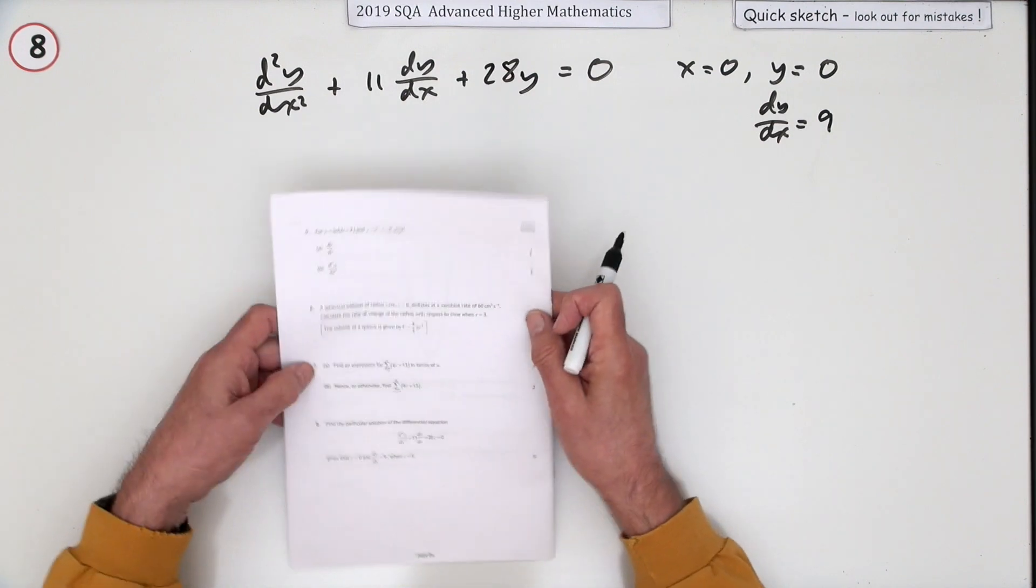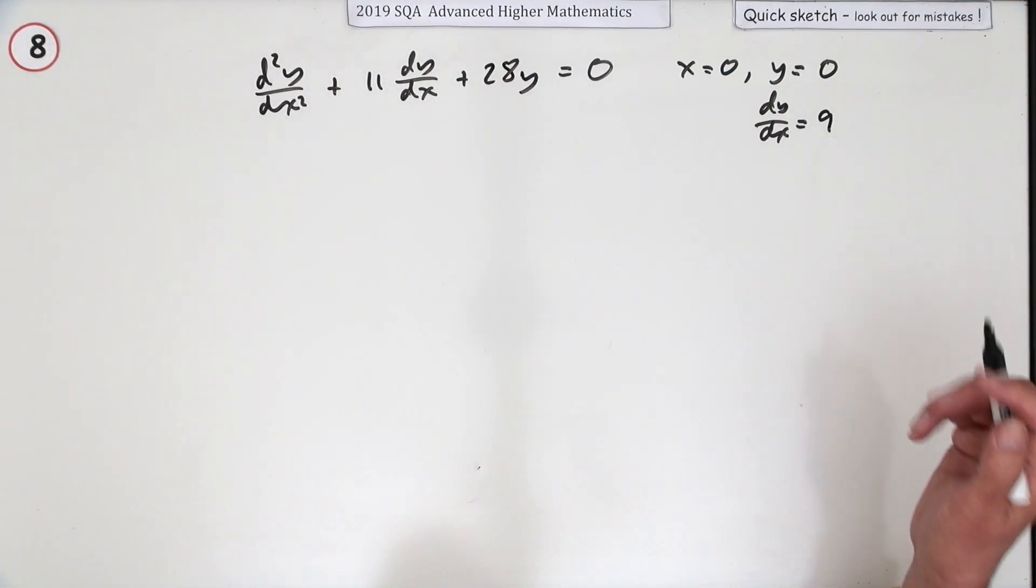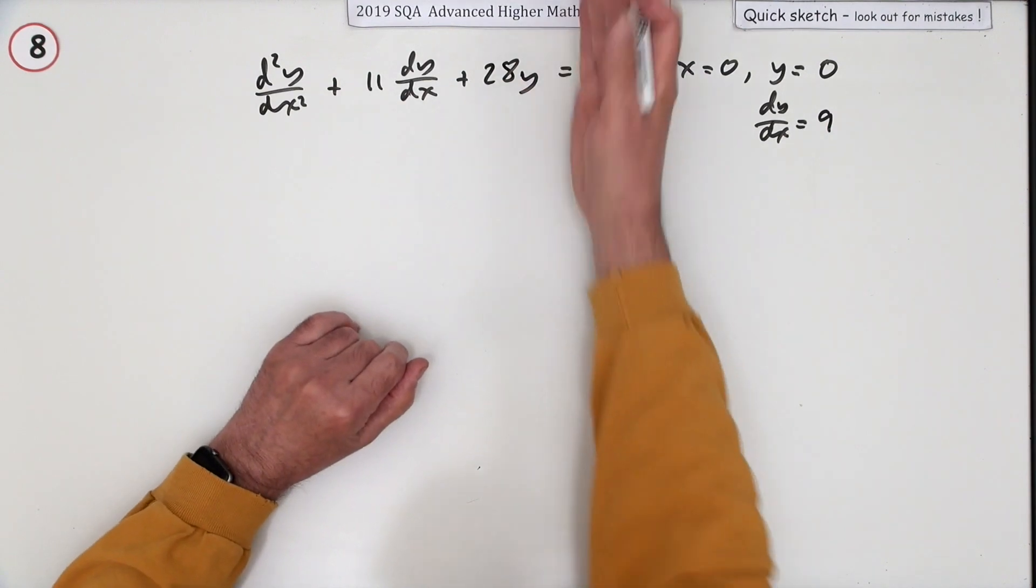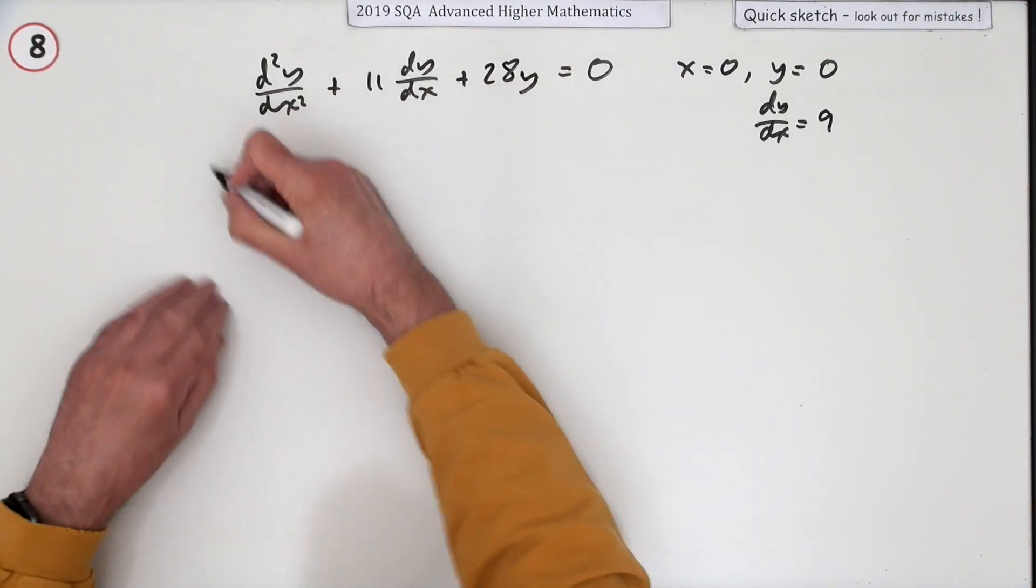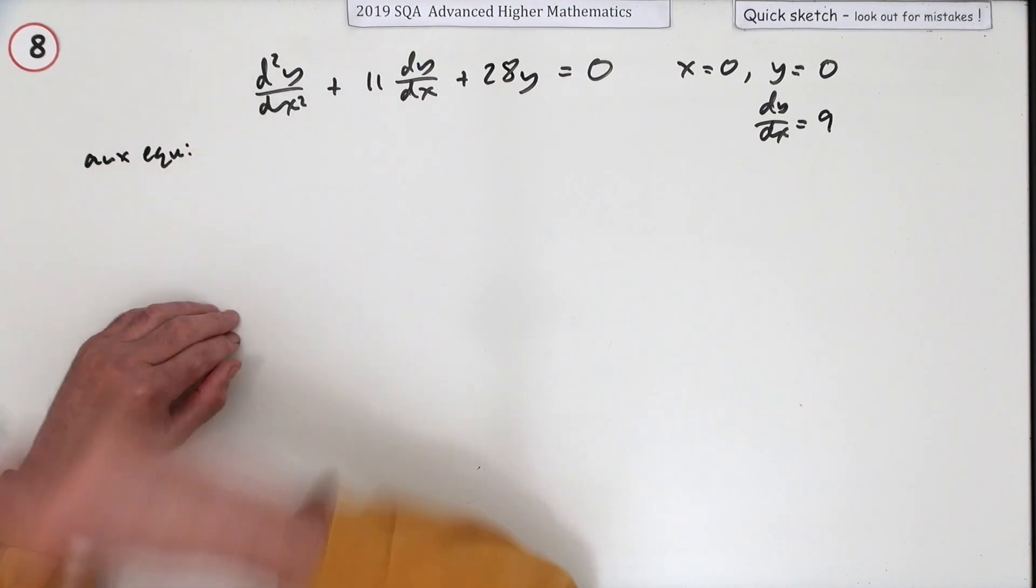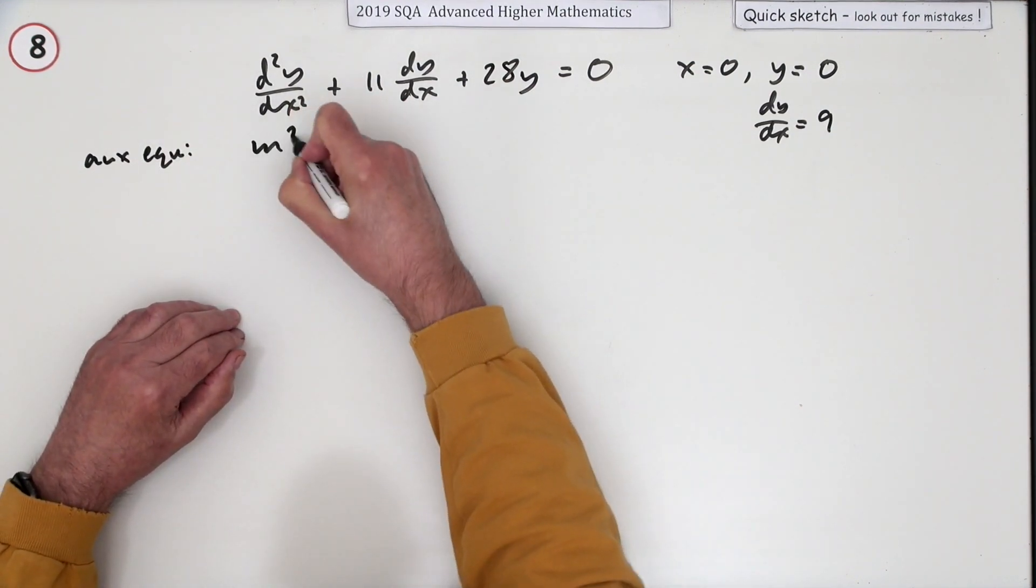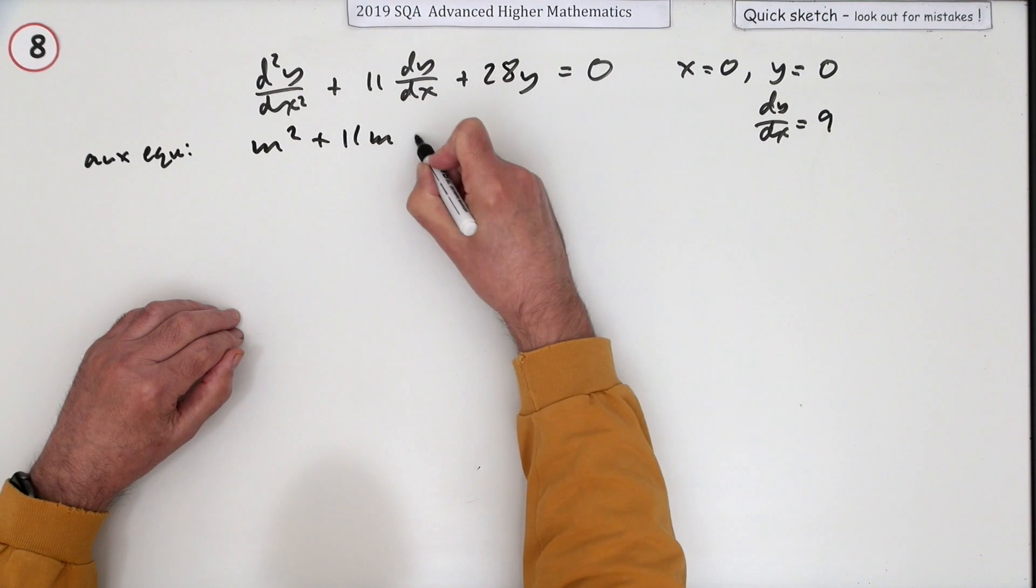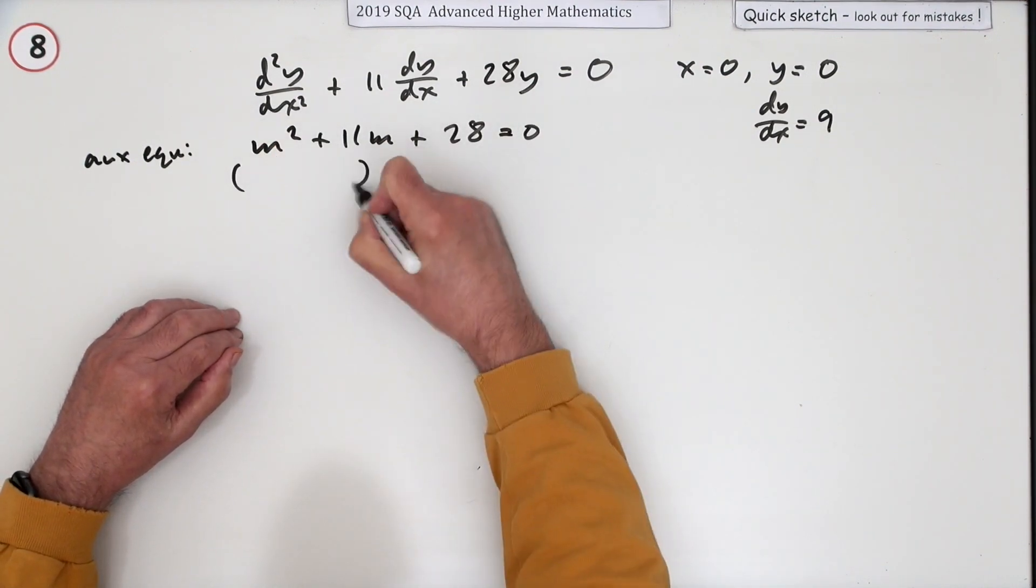Well, it's just a homogeneous equation so there's no particular integral to find. You're just going to kick it off with what's the auxiliary equation. So that'd be m² + 11m + 28 = 0.